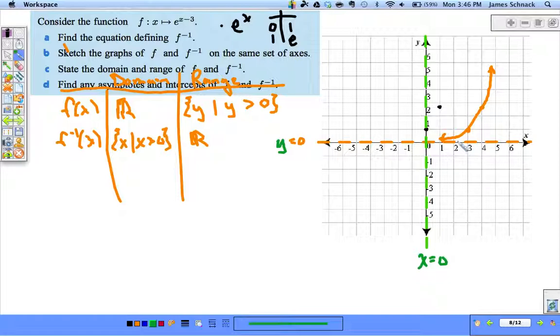This point right here (4, e) becomes (e, 4), so (2.71, 4). And my graph goes a little something like that.